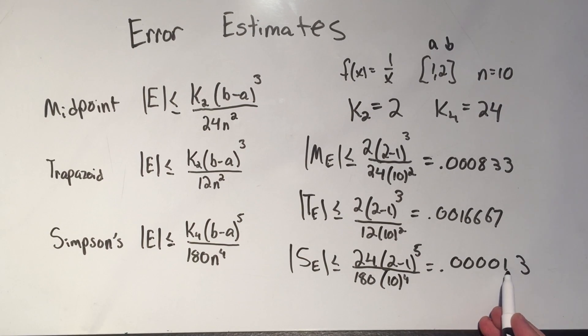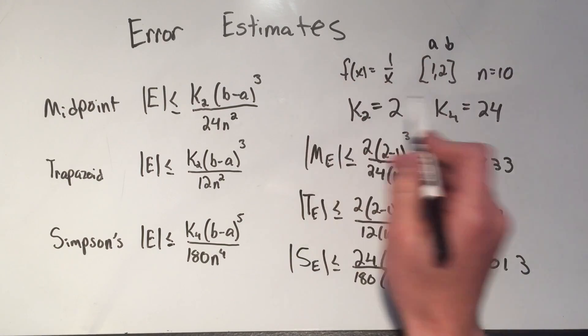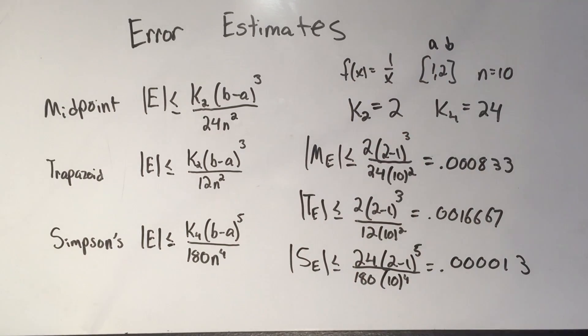We're getting within 1, 2, 3, 4, tens, hundreds, thousands, ten-thousands, like 100,000ths away from the actual value of the definite integral over this thing. So not too bad, all in all.